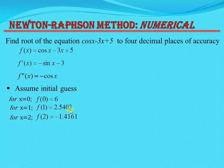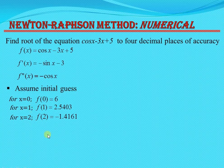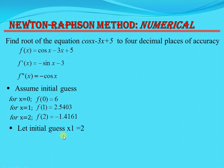The sign change occurs between x = 1 and x = 2, so the root lies between these values. We choose the initial guess as the value whose function is closer to 0. Since f(2) = minus 1.4161 is nearer to 0, we take the initial guess x1 = 2.